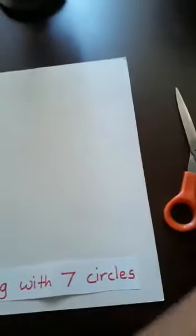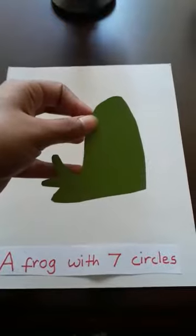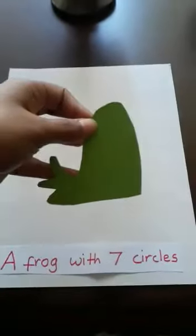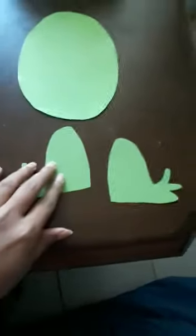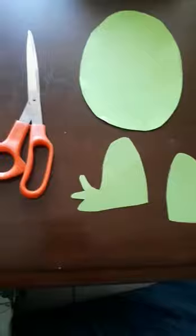Then draw and cut out the feet for the frog. Cut out two of these. Then cut out the eyes - two big white circles and two small black circles.